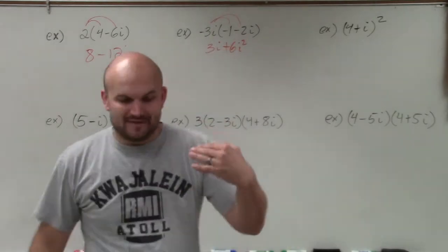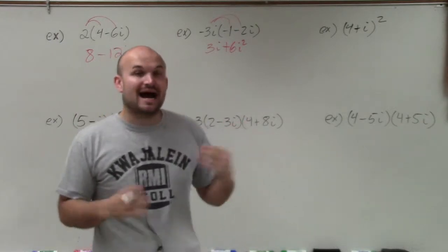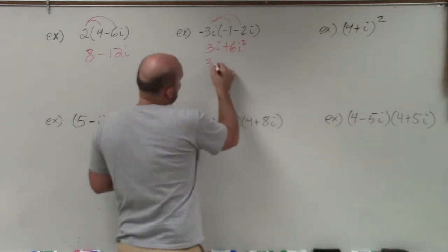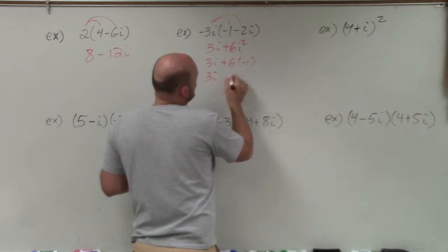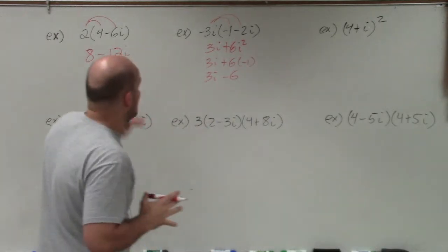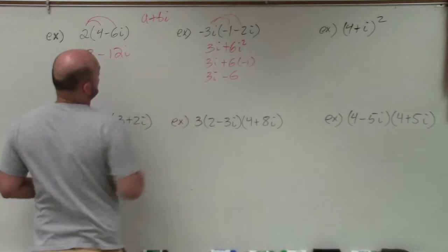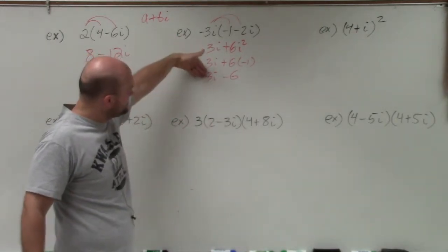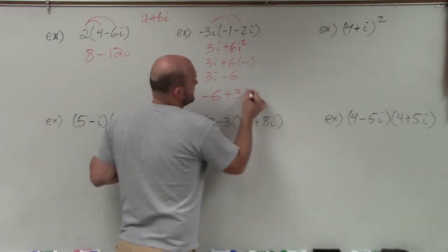Remember, i represents the square root of negative 1, so i squared equals negative 1. Therefore this becomes 3i plus 6 times negative 1. So that's 3i, and 6 times negative 1 is negative 6. Remember, all complex numbers are written in the form a plus bi, so we write the real number first. My imaginary part is positive 3i, so the final answer is negative 6 plus 3i.